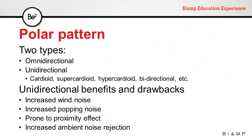There are certain benefits and drawbacks of having unidirectional microphones. They can have increased wind noise and increased popping noise. They are prone to proximity effect, which is an increasing low frequency response at shorter distances to the source. This is caused by the microphone's construction to achieve the directional polar pattern. And they can have increased ambient noise rejection, which allows placing these microphones farther away from the source.